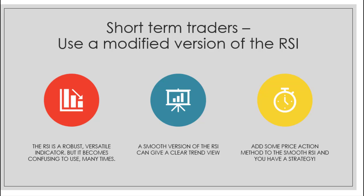The RSI is a robust versatile indicator but it becomes confusing to use many times. Anyone who uses indicators knows the RSI is good and gives a lot of advantage in analyzing a chart, but for most of its time it is very confusing — it went up four points, went down two points, the net result is a great deal of confusion. A smooth version of the RSI can give you a clear trend view, which is what we want.